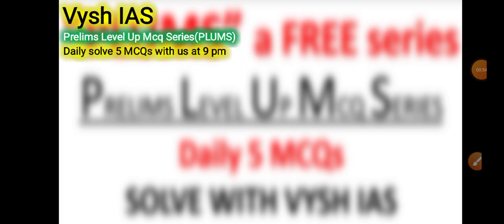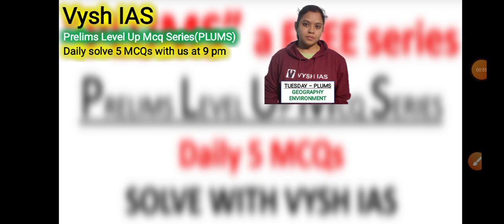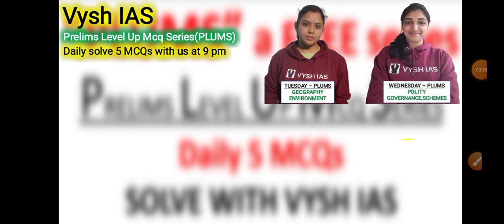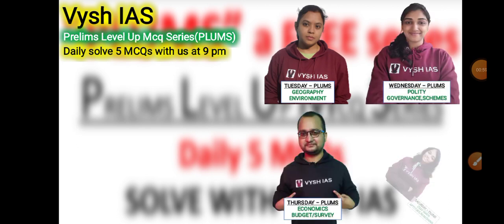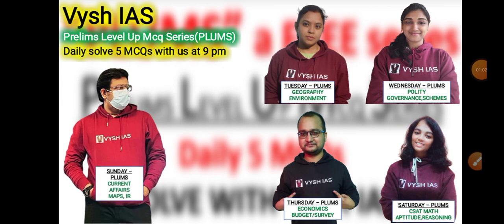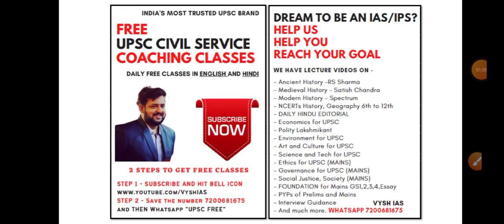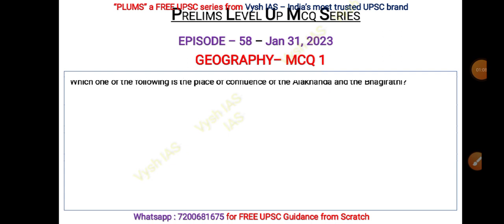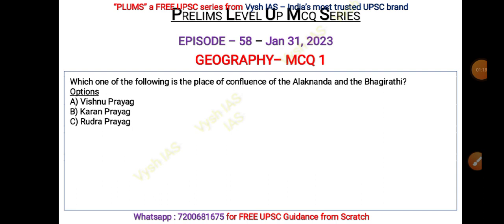We have come up with so many episodes from PLUMS and today is the turn of Geography. This is Divya taking Geography MCQs today, and other subjects are taken by other faculty members. Let us start with the first MCQ: which one of the following is the place of confluence of Alaknanda and Bhagirathi? Where is the place that Alaknanda and Bhagirathi meet?